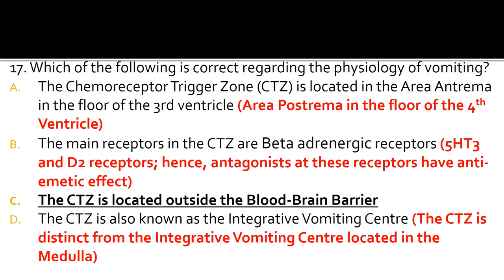A is false because the CTZ is located in the area postrema in the floor of the fourth ventricle. B is false because the main receptors in this region are 5-HT3 and D2 receptors — that is why antagonists at these receptors have an anti-emetic effect. D is false as the CTZ is distinct from the Integrative Vomiting Centre, which is located in the medulla.